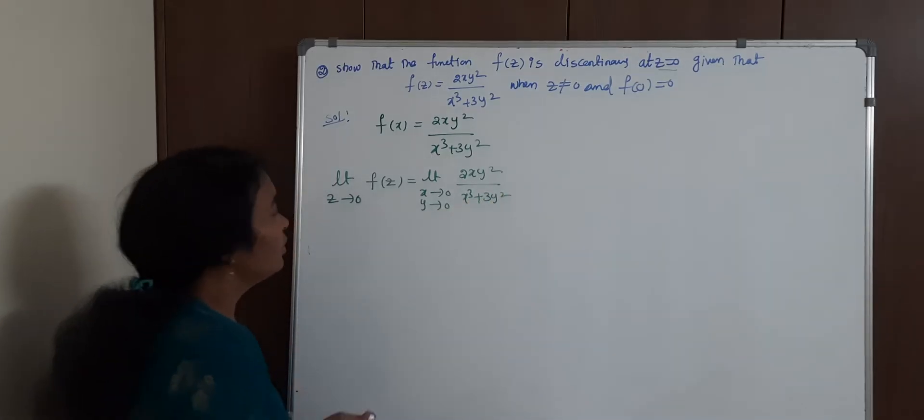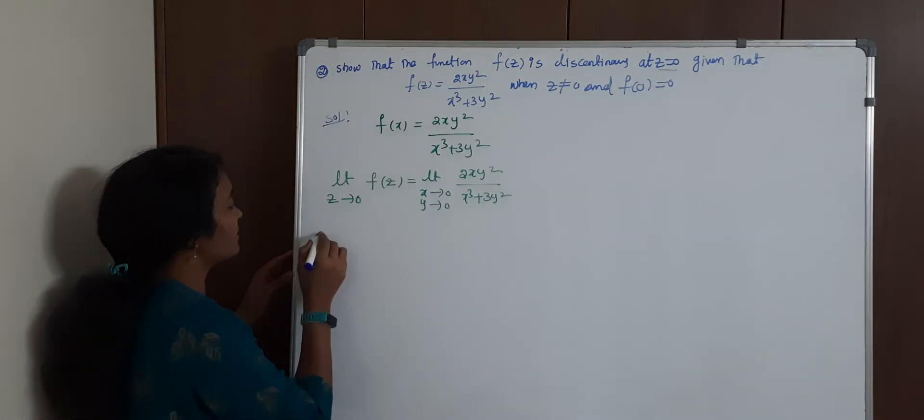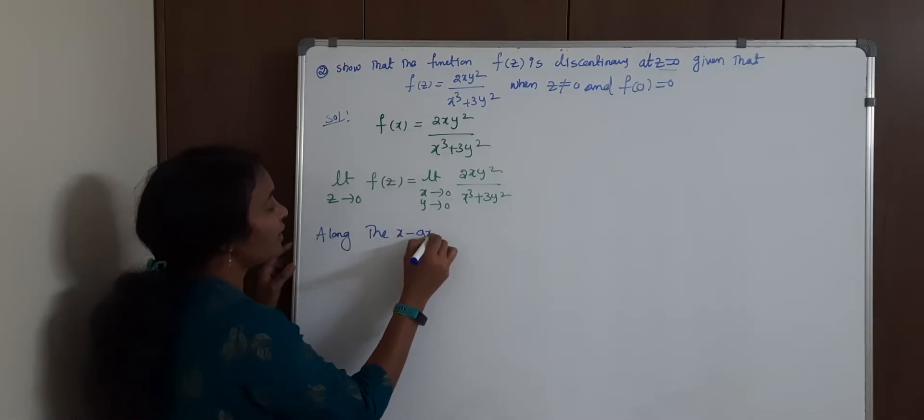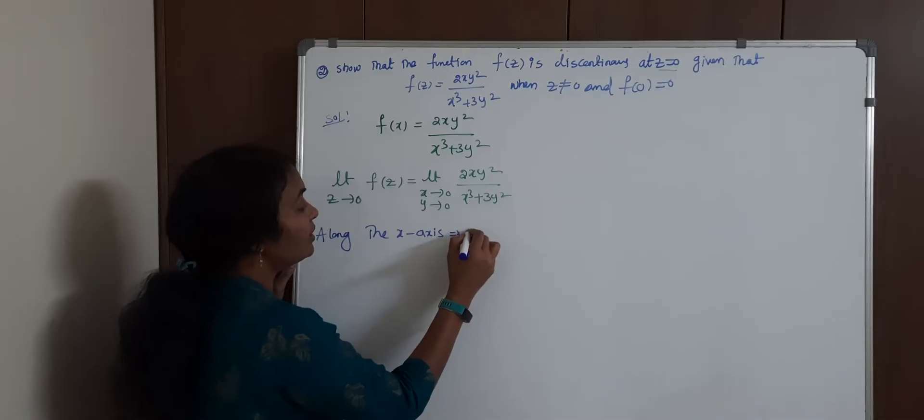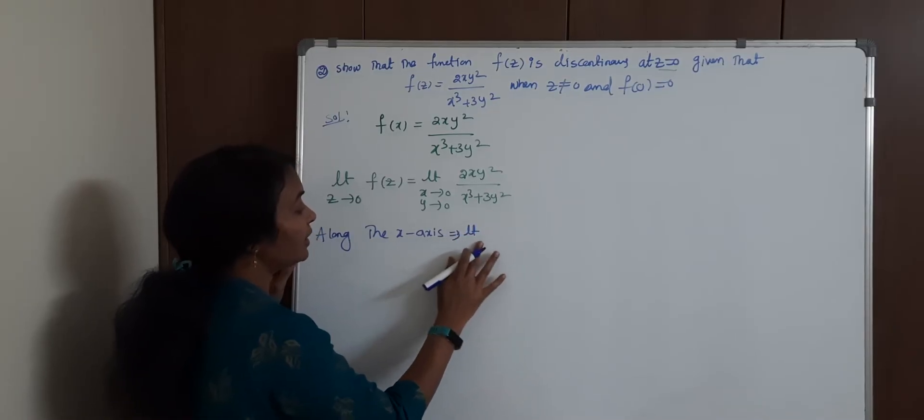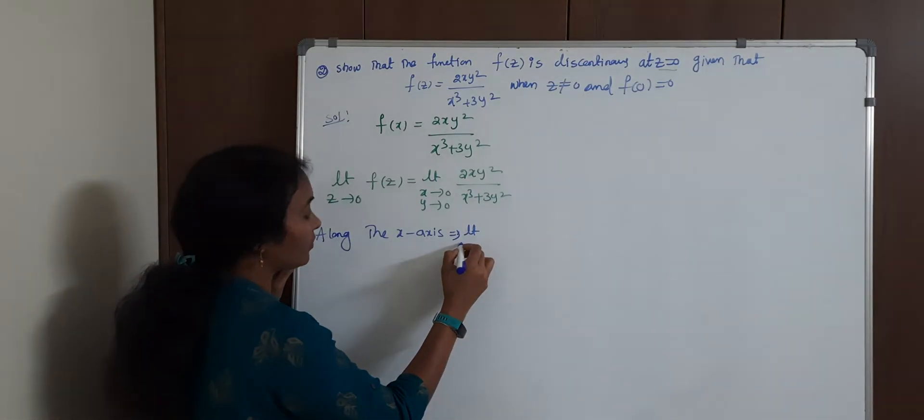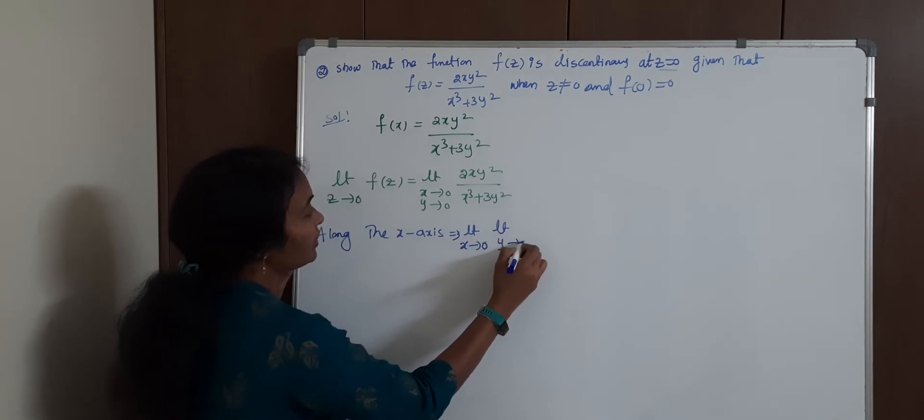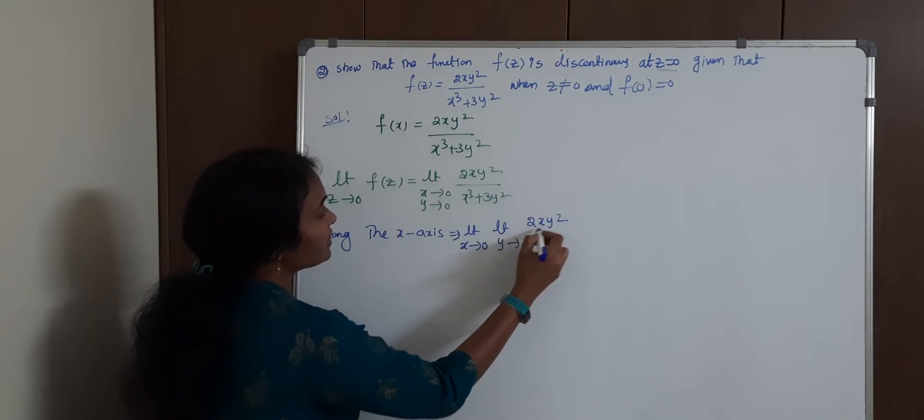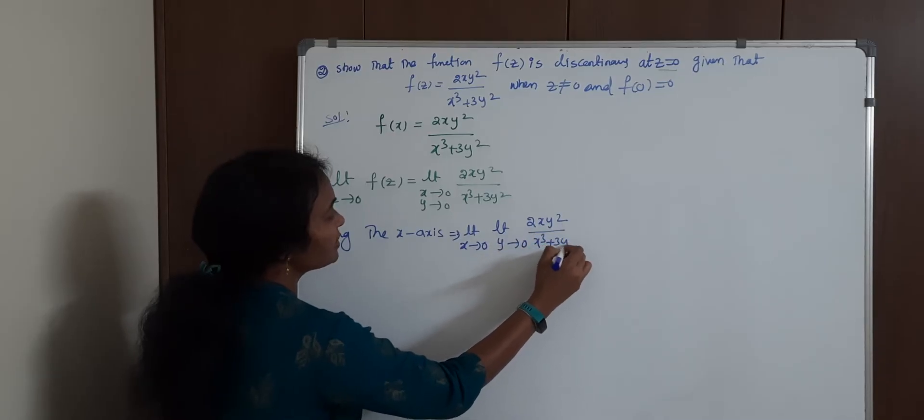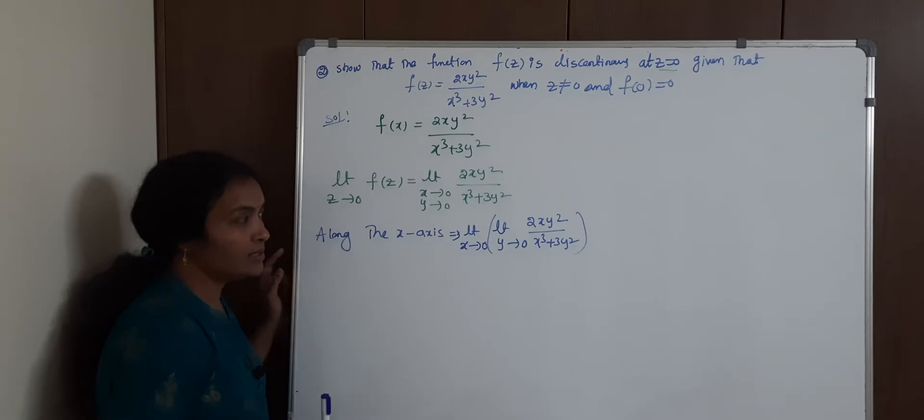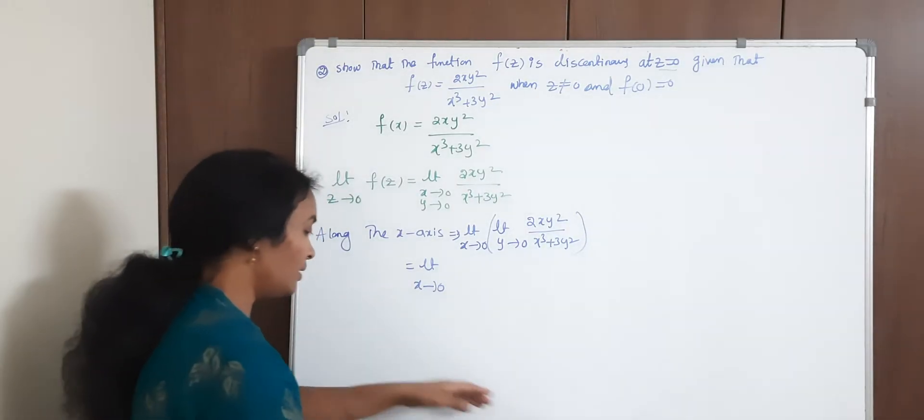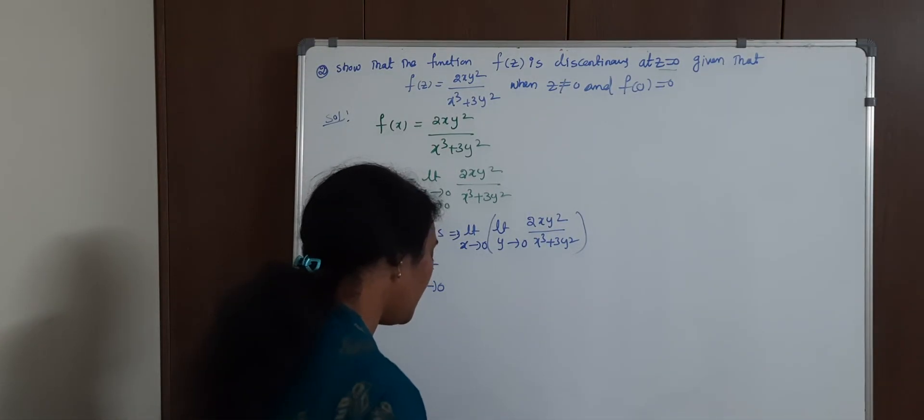I need to write first along with x-axis. Along the x-axis. Limit x→0, you need to write x→0 and limit y→0, 2xy² / (x³ + 3y²). You need to substitute 0 here.